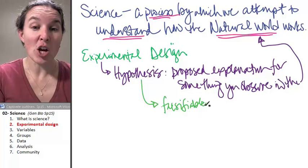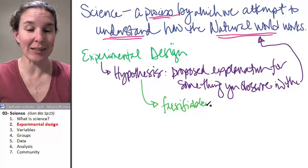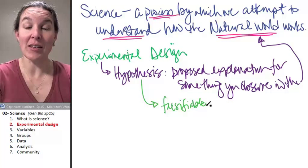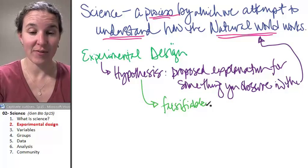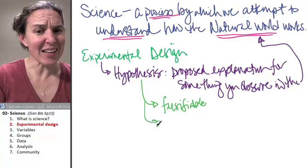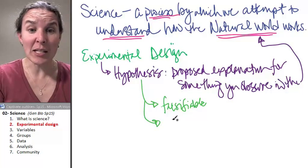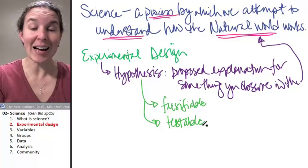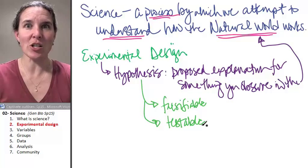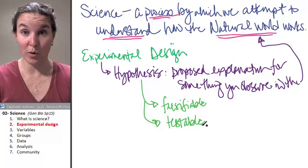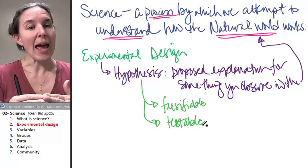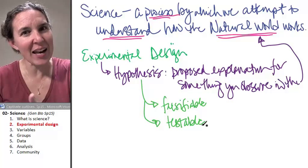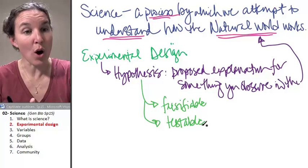In other words, you have to be able to collect data that indicates your hypothesis is not accurate. And second, it's got to be testable. A hypothesis is not going to fly if you can't actually design a test to see if it's true or not. You have to be able to collect data that indicates it actually is not true.